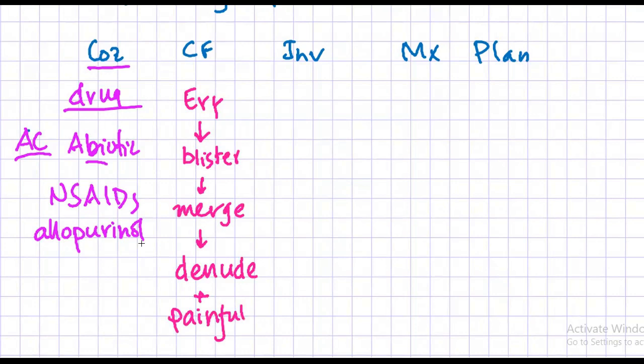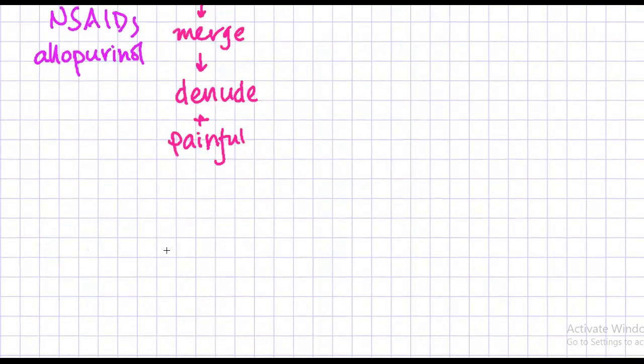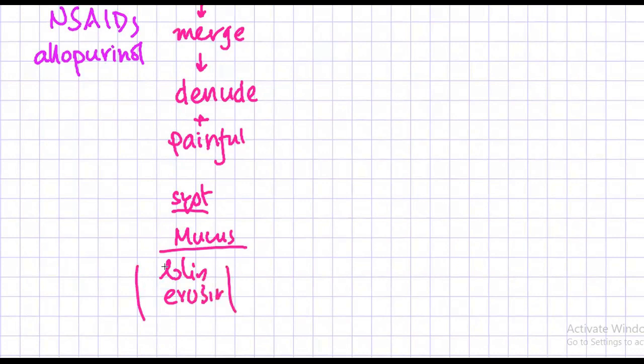The classic feature of TEN. Alongside those features, the patient will also have systemic illness such as fever and severe weakness. There will be involvement of the mucous membranes, so there will be blisters, erosions, and ulcers in the mucous membranes.